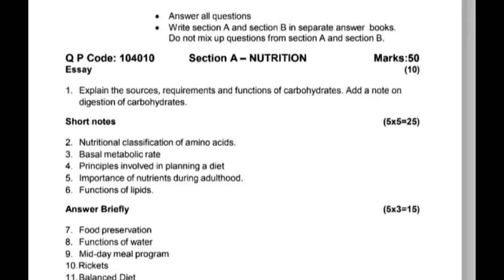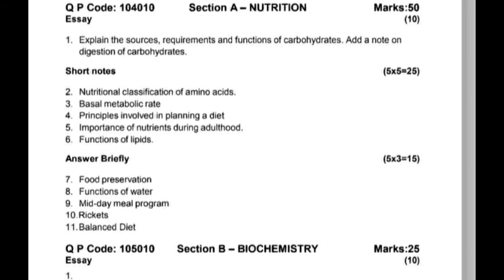Question number two, 10 marks: Nutritional classifications of amino acids. Five-mark questions include: Basal Metabolic Rate, principles involved in planning a diet, and importance of nutrients during adulthood. Next: Functions of lipids.